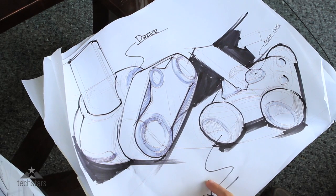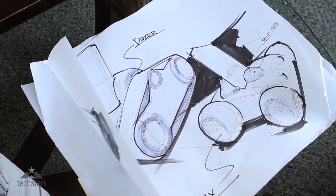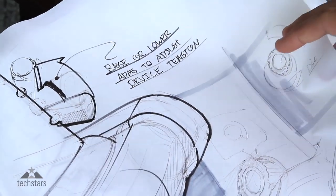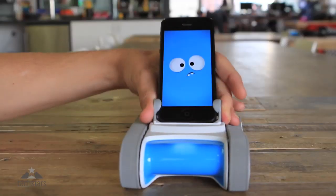These are design concept drawings of Romo. We were just iterating through ideas of what Romo could look like. The third generation has a tilt mechanism that allows him to tilt 15 degrees forward and 45 degrees back.